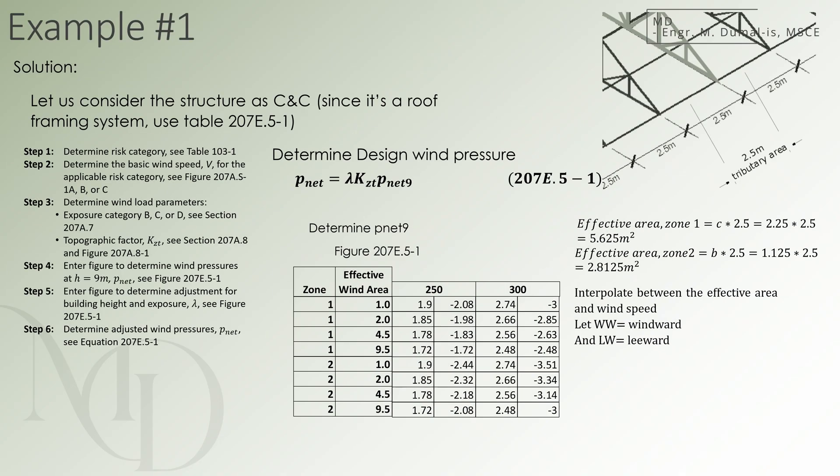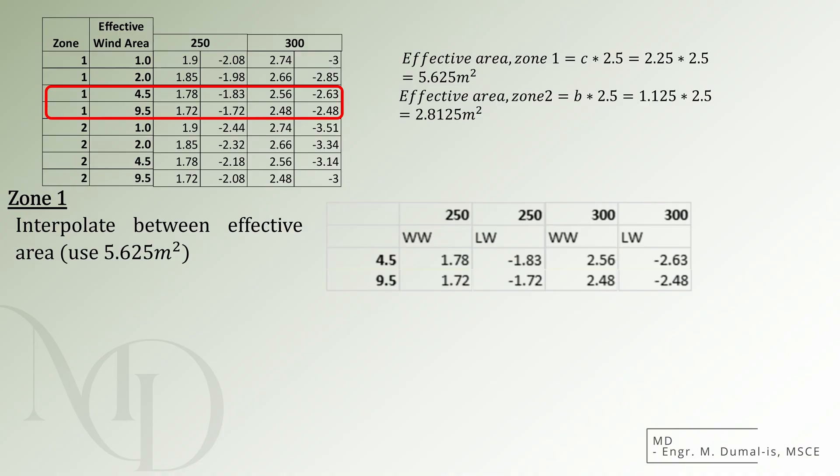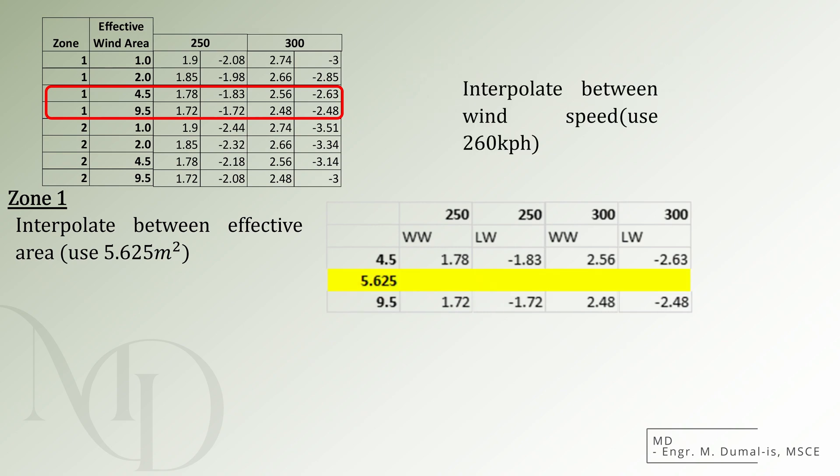We have all of the input parameters. Let us now solve for PNet9. We begin with zone 1. Since the effective area is 5.625 square meters, we will refer to the rows corresponding to areas of 4.5 and 9.5 square meters. Let us add another label. The positive pressure will be windward and the negative pressure will be leeward. Between 4.5 and 9.5 square meters, we now insert the zone 1 area, which is 5.625 square meters. We now begin interpolating the values for each column. Starting with the first pairs, if 4.5 square meters corresponds to 1.78 kilopascals and 9.5 square meters corresponds to 1.72 kilopascals, then the interpolated pressure for an area of 5.625 square meters will be equal to 1.7665 kilopascals. We will apply the same interpolation process for the other values as well, following the same procedure of identifying the two nearest tabulated entries and then estimating the intermediate value.